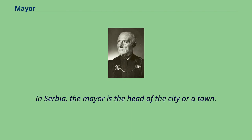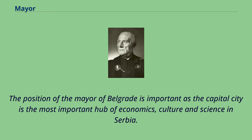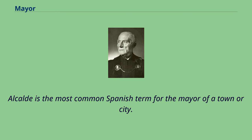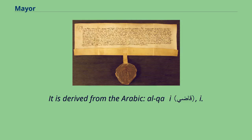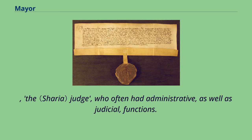In Serbia, the mayor is the head of the city or a town, acts on behalf of the city, and performs an executive function. The position of the mayor of Belgrade is important as the capital city is the most important hub of economics, culture, and science in Serbia. Furthermore, the post of the mayor of Belgrade is the third most important position in the government after the prime minister and president. Alcalde is the most common Spanish term for the mayor of a town or city, derived from the Arabic al-qadi, meaning the judge, who often had administrative as well as judicial functions.